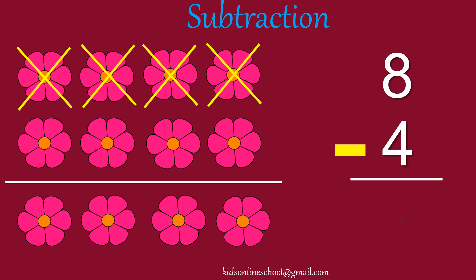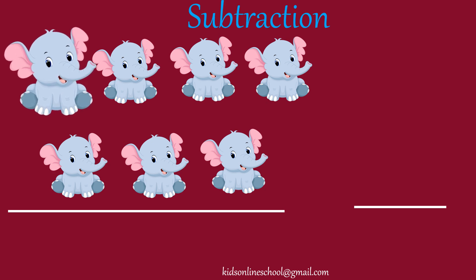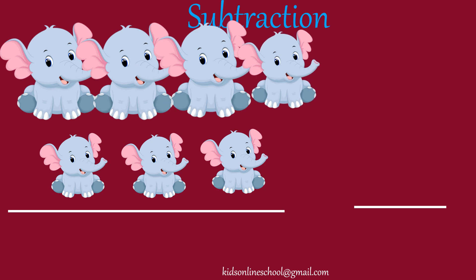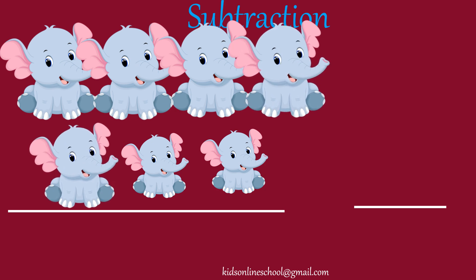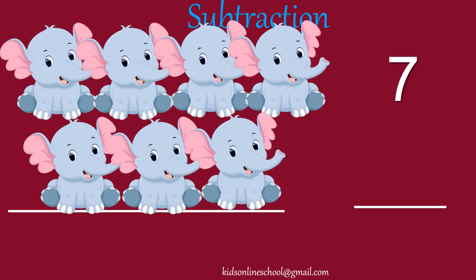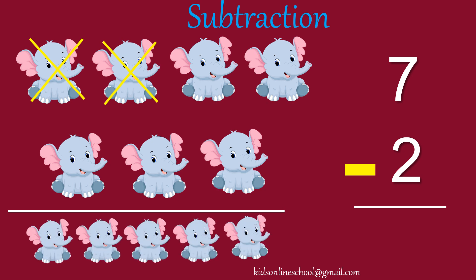8 minus 4 is 4. 1, 2, 3, 4, 5, 6, 7. 7 elephants. Take away 2. Let's start counting: 1, 2. How many elephants left? 5. 5 elephants. 7 minus 2 is 5.